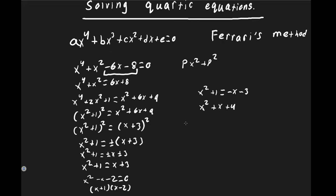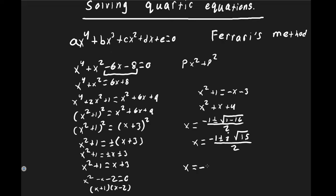For the second quadratic, we use the quadratic formula: x = (−1 ± √(1 − 16)) / 2, giving the complex solutions x = (−1 ± i√15) / 2. From the first quadratic we get x = −1 and x = 2 as our real solutions.